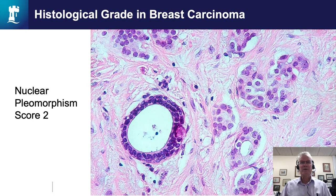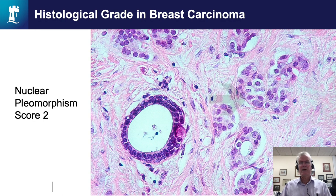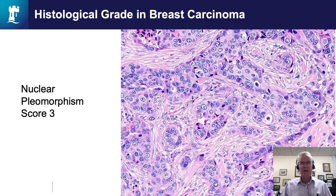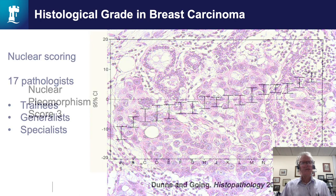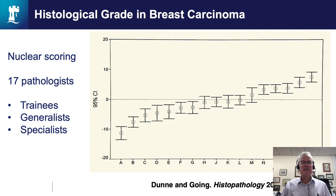In this example, we have normal epithelial cells and tumor cells infiltrating the stroma. You can see these tumor cells are somewhat larger than the adjacent normal cells and vary in size and shape, so this case would be allocated a score of two for nuclear pleomorphism. In this next case, the cells are very large and vary in size and shape, so this would be allocated a score of three. Here's another example showing very large, bizarre tumor cell nuclei — again allocated a score of three.